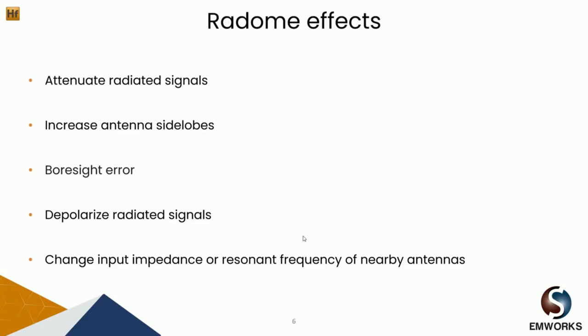So far we have talked about radome wall types and some of the areas where radomes are being used. Let's see the effect of using radomes. A well-designed radome provides environmental protection with the minimum effect on the RF performance of the antenna and system. Electrically, the main concern is the radome's contribution to insertion loss. Insertion loss reduces the available signal, decreasing effective radiated power and the ability of the antenna to receive weak signals. Radomes can also increase the antenna's side lobes, resulting in interference with other communication systems and increasing the likelihood of signal detection and interception from unintended sources. Other electrical effects include changing antenna beam width, shifting of the antenna boresight, impacting antenna polarization, as well as the input impedance or resonance frequency of nearby antennas.